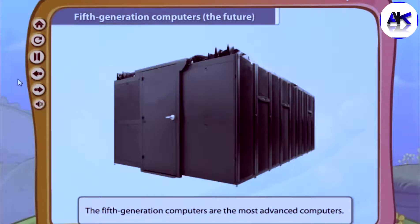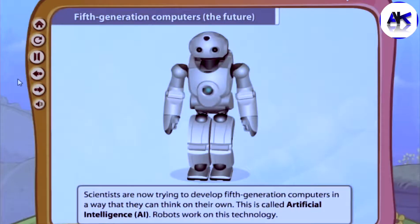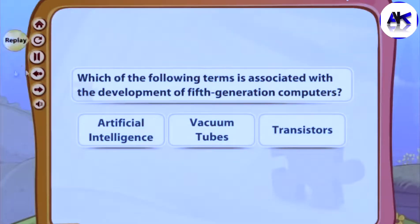Computers currently being researched and developed are called fifth generation computers. These are the most advanced computers. Scientists are trying to develop fifth generation computers that can think on their own — this is called artificial intelligence. Robots work on this technology.